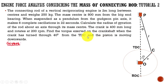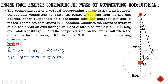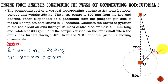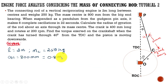Now let us write down the given data. The length of the connecting rod is 2 meters, and the mass of the connecting rod is 250 kg. The distance between the big end bearing and the mass center is given — the big end bearing is at one end, and the mass center point G is 800 mm from it, which we convert to 0.8 meters.